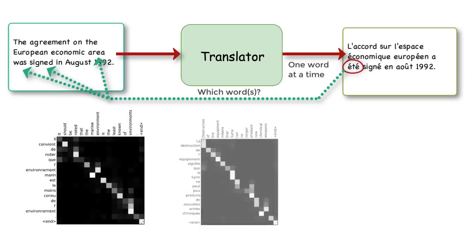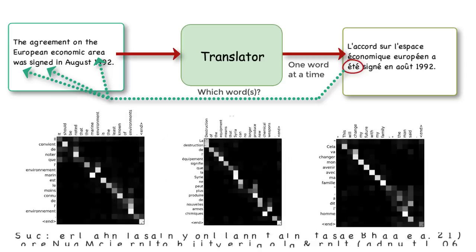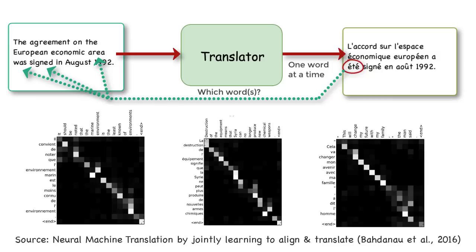The model learns to focus its attention only on the English word august while generating the French word août. In this way, the model looks at thousands of other English sentences and their corresponding French translations, and it learns which English words to focus its attention on while generating the words of the French translation.